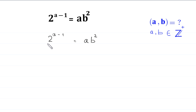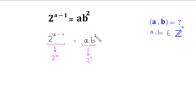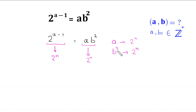The left-hand side of the equation, 2 to the power a minus 1, is a power of 2. So the right-hand side, a times b squared, must also be a power of 2. And a times b squared can only be a power of 2 if a is a power of 2 and b squared is a power of 2. And b squared can only be a power of 2 if b is a power of 2.